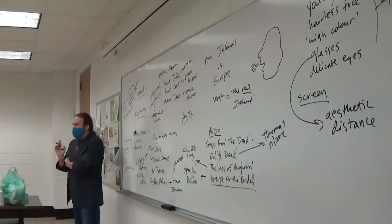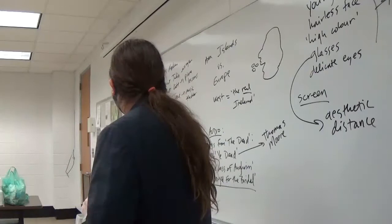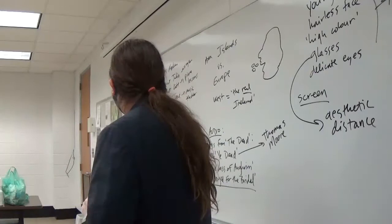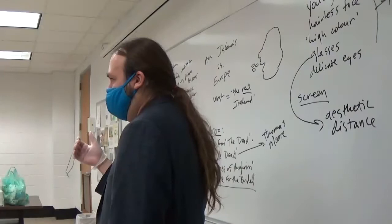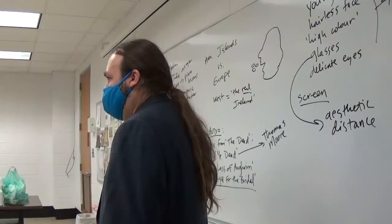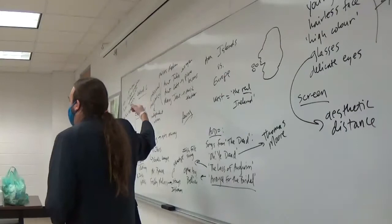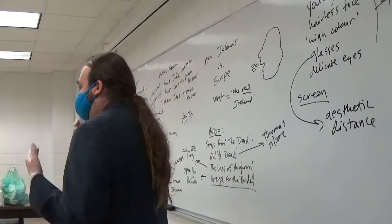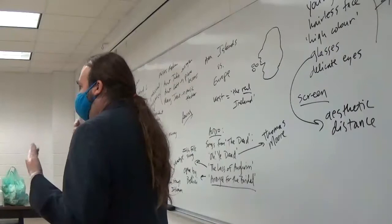So, when Aunt Julia sings Arrayed for the Bridal, it's ironic because she is an elderly spinster who would never have had the opportunity to get married, right? Simply by being, by virtue of being a younger daughter whose older sister took all the dowry money. So, the Miss Morkans are independent of necessity, right? They work because of, essentially because of the way Irish family structure was set up in the early 20th century. And this is, again, largely an imitation of British Victorian cultural values.